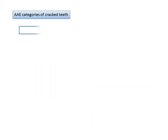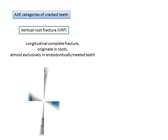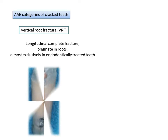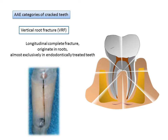The fifth category is vertical root fractures (VRFs). These are longitudinal complete fractures mostly seen in endodontically treated teeth, which become quite brittle and are more prone to traumatic injuries. A fracture line runs through the entire length of the root, visible as a black line on imaging.